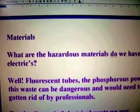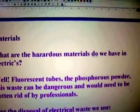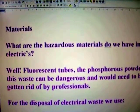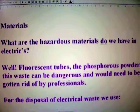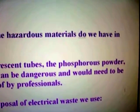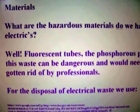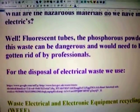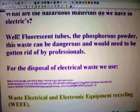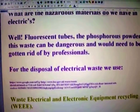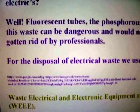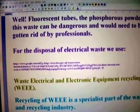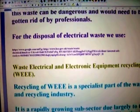What are the hazardous materials in electrics? There are quite a few — fluorescent tubes contain phosphorus powder, and there is a further list further down. There is additional information logged online which was produced by the HSE.